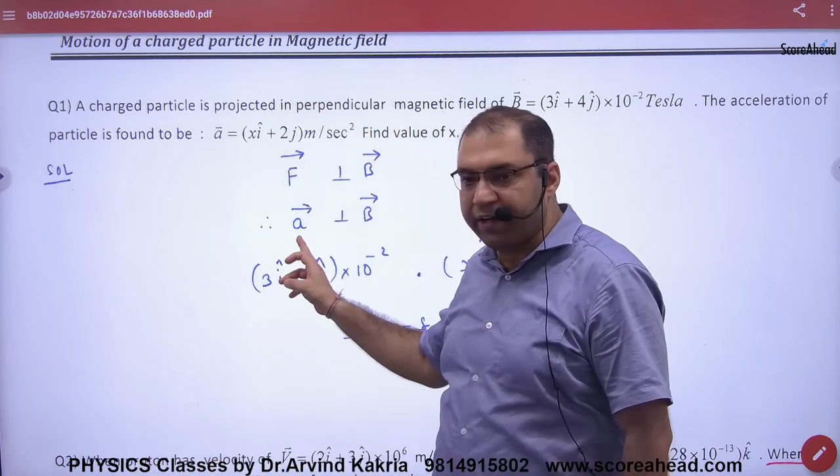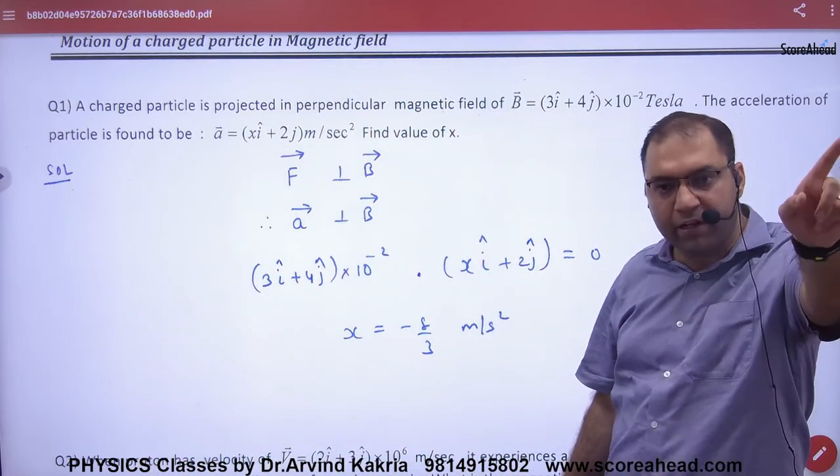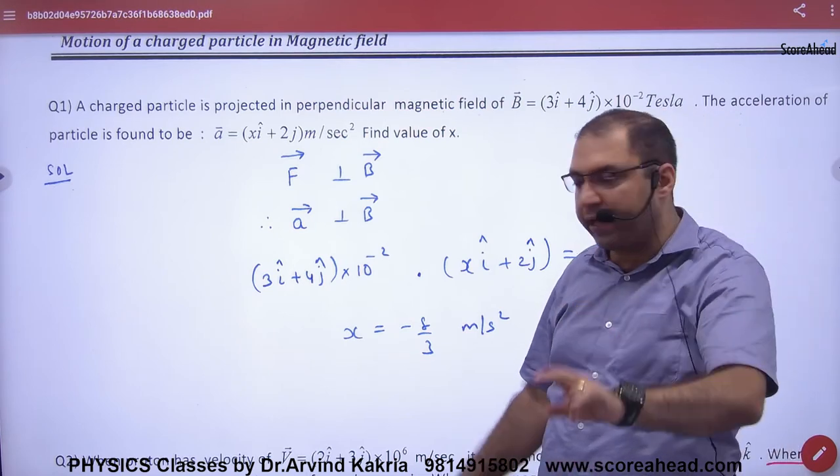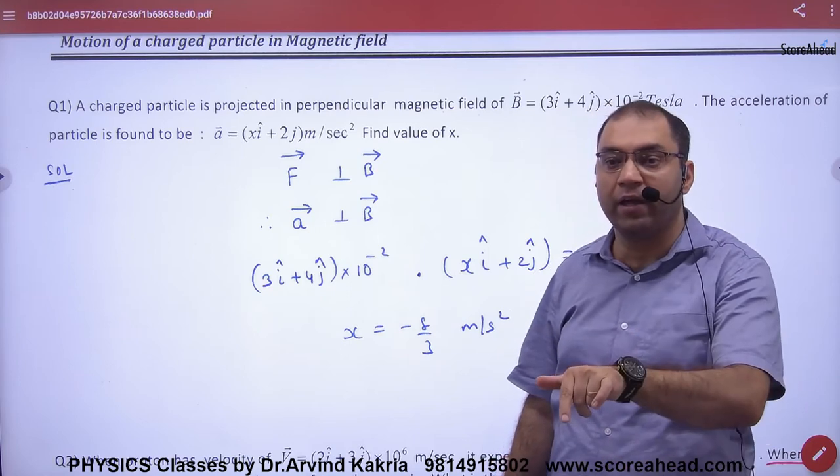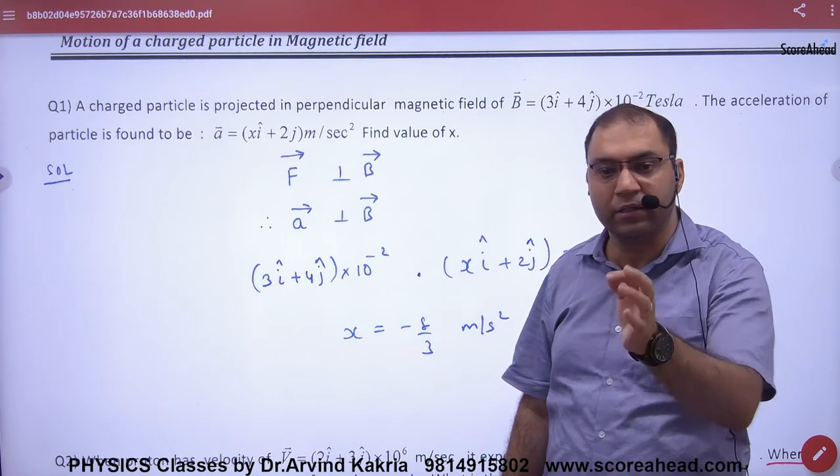So you have given the two vectors. Now I am using the plus one theory. What were we doing in plus one? If there are two vectors, one a vector, one b vector, and we have to know that both are in 90 degrees, then what will be the dot product? Zero.